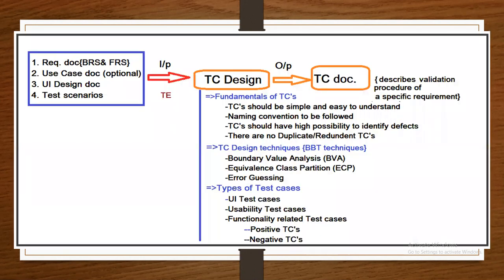Now here is a block diagram about test case design. The tester is responsible for test case design. The inputs and reference documents for testing are requirement documents like BRS and FRS, use case document which is optional, user interface design document, and test scenarios. These are the different kinds of inputs the tester is going to refer before preparing the test cases. Today in this session my focus is on test case preparation.